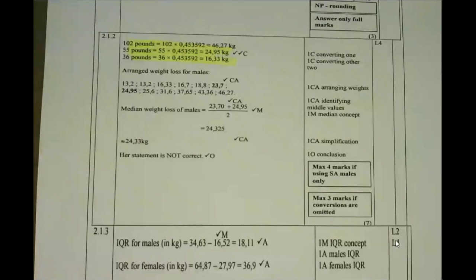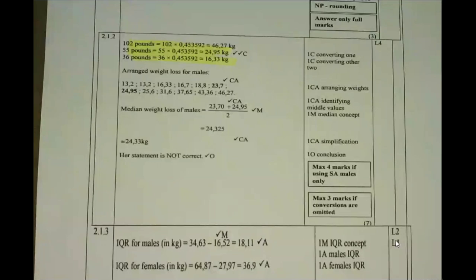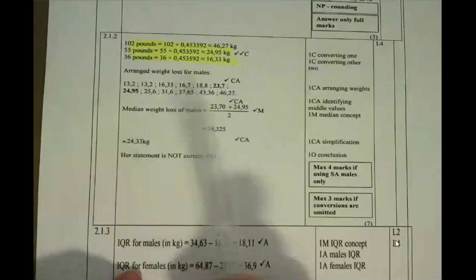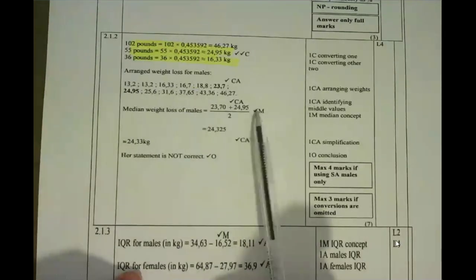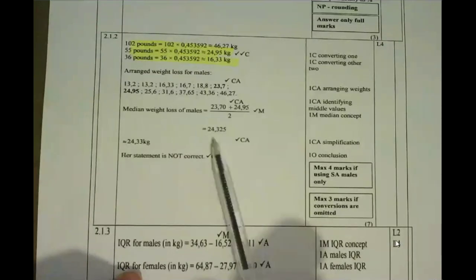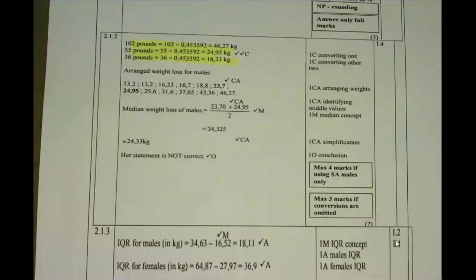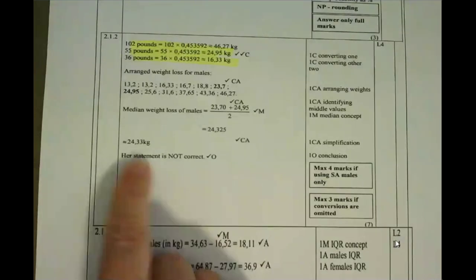Because we've got 12 values, there are two values that are going to be in the middle: 23.7 as well as 24.95. Because there are two values in the middle, you have to add the two together and divide by two, giving a total of 24.325. The question says to verify if the statement is valid — her statement said the median was 33.8, and as you can see this is not 33.8. That final mark for saying the statement is not correct is very important.